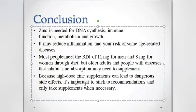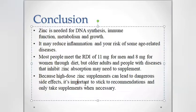In conclusion, zinc is needed for DNA synthesis, immune function, and metabolism and growth. It may reduce inflammation and the risk of some age-related diseases. Most people meet the daily requirements of 11 mg for men and 8 mg for women through diet. Excessive intake may lead to some kinds of health issues. This is all about zinc and fluorine — thank you very much.